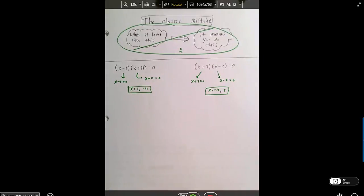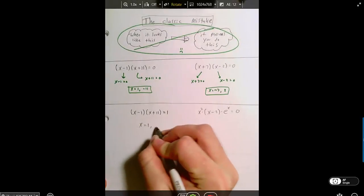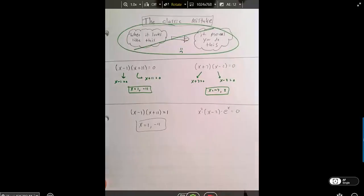You totally can do this. And then the test comes around, and you see problems that look like this. And you say, oh yeah, I recognize this. When it looks like this, you do this. X equals 1. X equals negative 11. I am a champion.